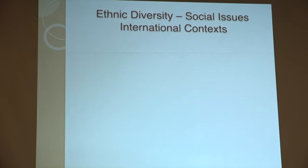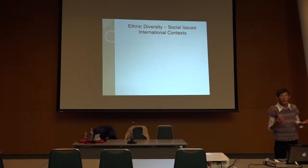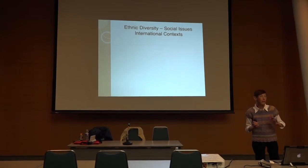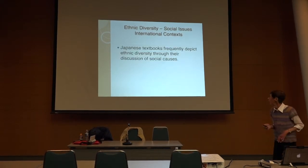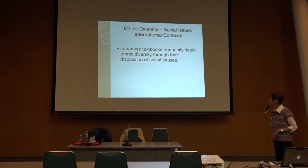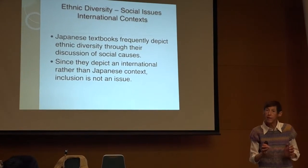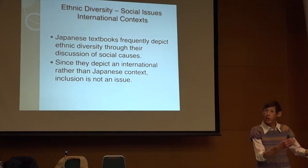I found there was a lot of ethnic diversity in the sense that there weren't only Caucasians — there were people from Cambodia, Bangladesh, and so on. But it was in an international context. It was the ethnicity that we see in developing countries, portrayed as a social issue. Social issues seem to dominate a lot of ELT texts in Japan when dealing with ethnic diversity. Since they are depicted on an international level, they really didn't deal with inclusion.